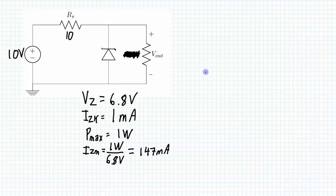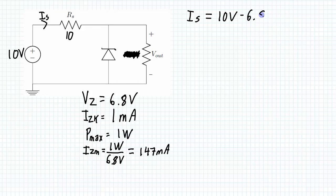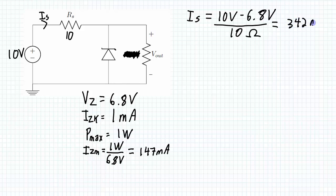Assuming the diode is in regulation, the source current Is = (10 V − 6.8 V) / 10 Ω = 3.2 V / 10 Ω = 342 milliamps. So 342 milliamps is coming from the source as long as the diode is regulating.